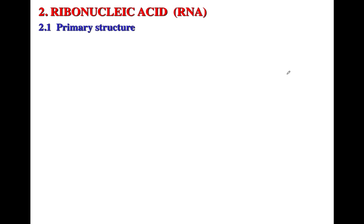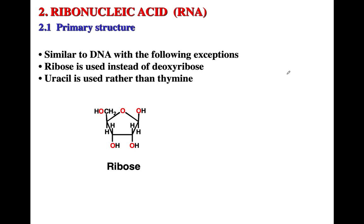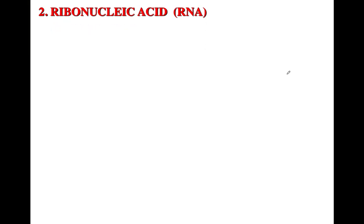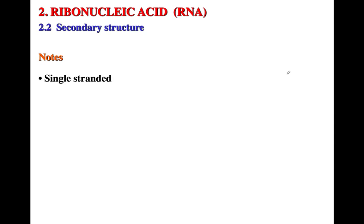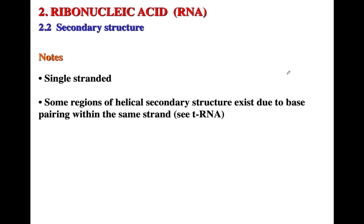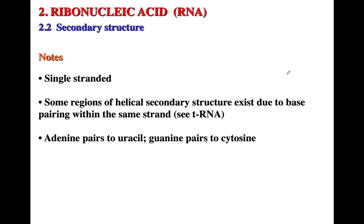Now let's talk about ribonucleic acid. The primary structure is very similar to DNA, with a few exceptions: ribose is used instead of deoxyribose for the sugar, and uracil is used instead of thymine as the base. RNA is single-stranded, though some regions of RNA exist as double-stranded because base pairing can occur within the same strand, as in tRNAs. Adenine pairs to uracil and guanine pairs to cytosine.